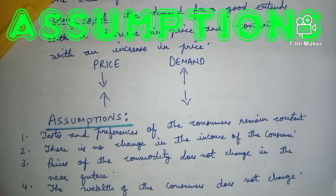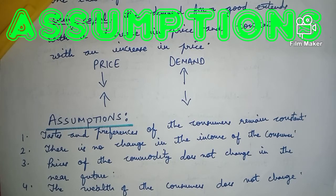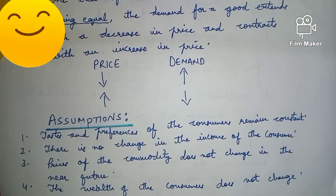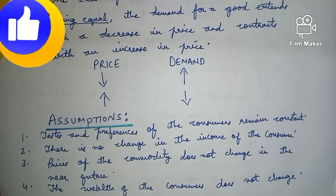Number four: the wealth of the consumers does not change. We assume the wealth of the consumer is constant. Because of the change in prices, there is a change in demand of the commodities. So these are the four basic assumptions of law of demand: taste and preferences remain constant; there is no change in the income of the consumer; prices of the commodities do not change in the future; and the wealth of the consumers also does not change.